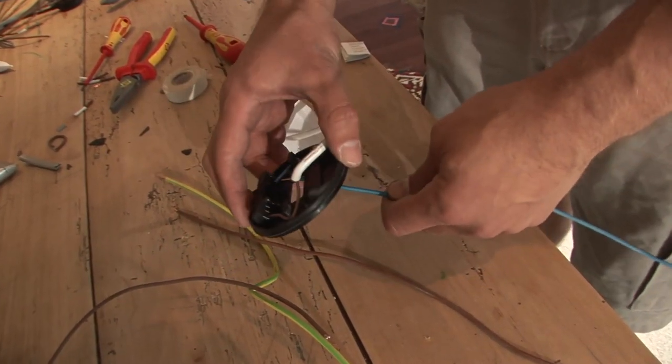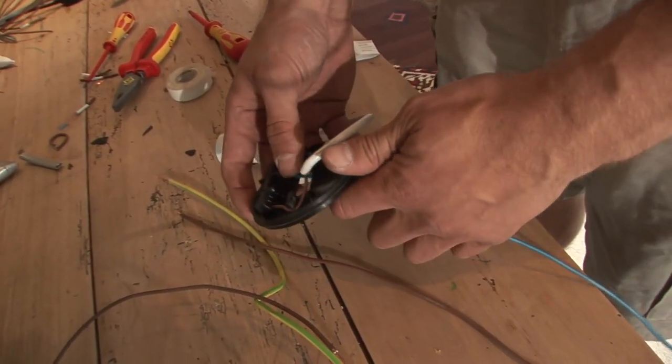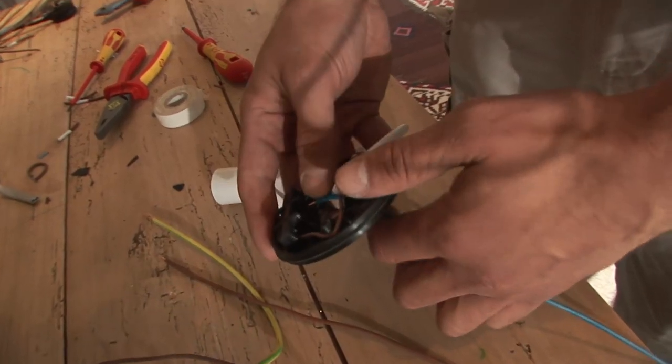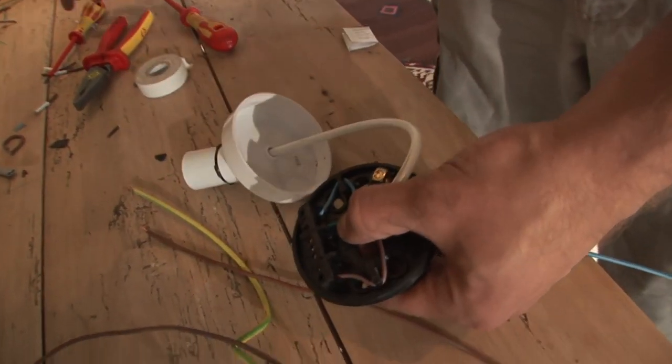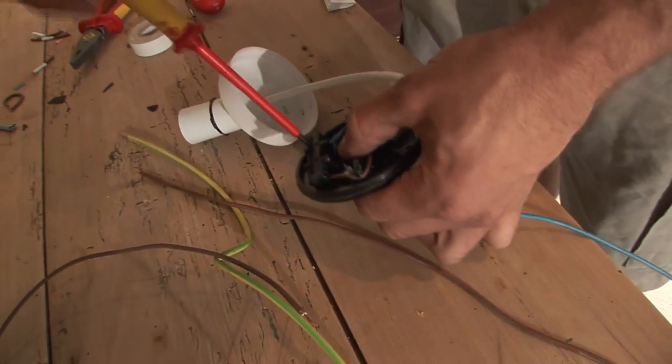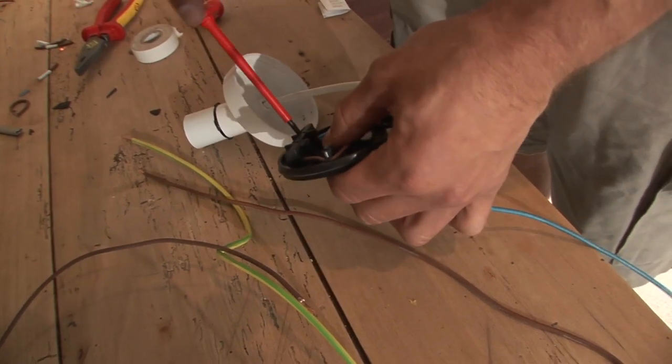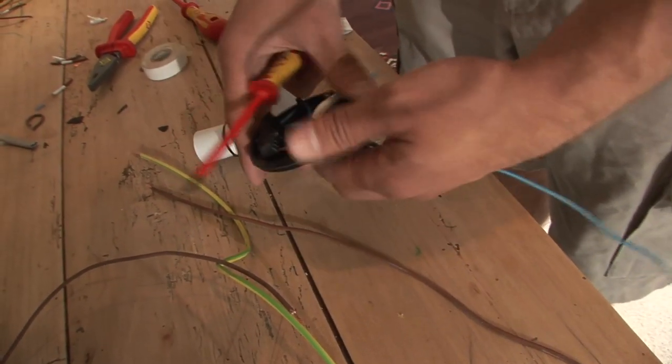Take your neutral straight into the neutral bar using 1.5 cable, just tying it up. Again, just hand tight, not too much.